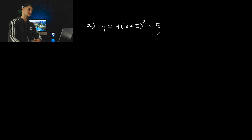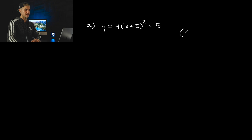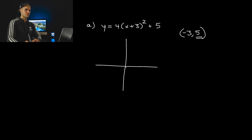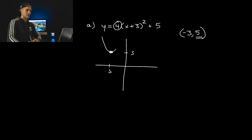Notice that this is a quadratic given in vertex form. It's always nice when it's given in vertex form because the vertex is what is going to affect the range, more specifically the y-value. So the vertex of this quadratic is (negative 3, 5). And if we do a rough sketch of this, negative 3 is here, 5 is here, vertex is here. And because the a-value is positive, it's a quadratic that's opening up.